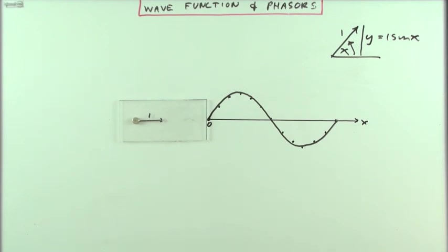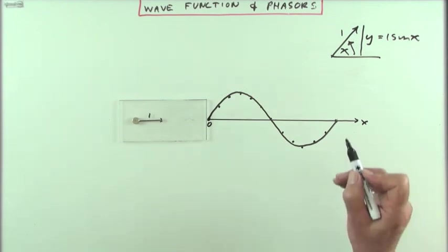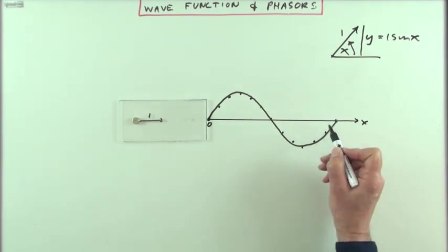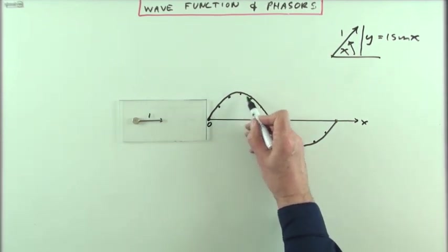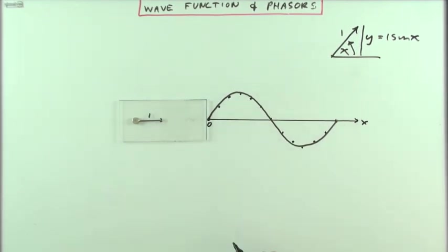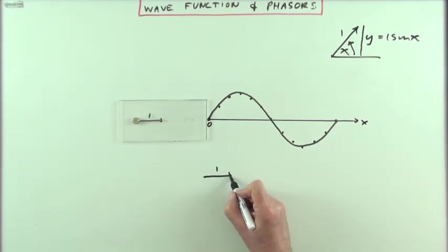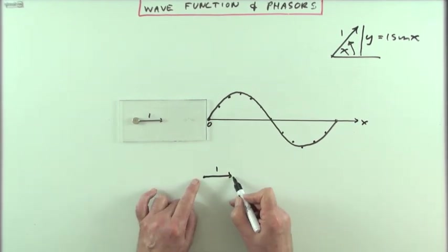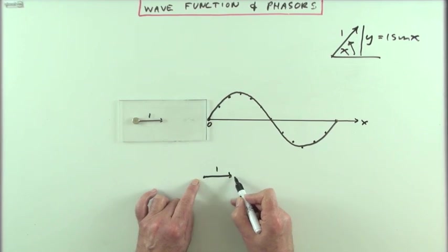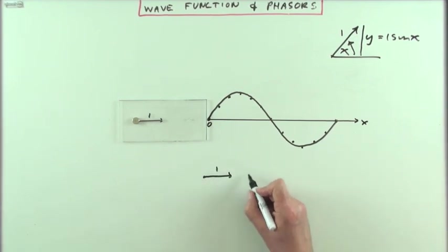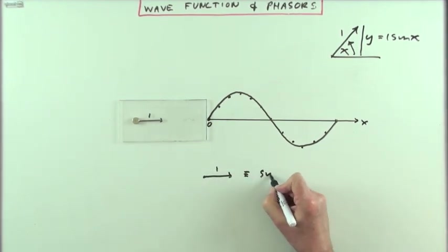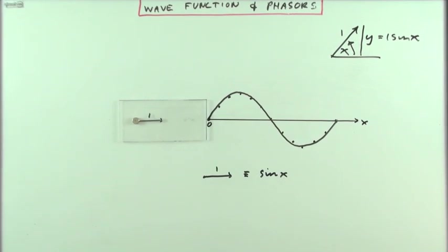The handy thing is that you can associate this wave with that vector. This whole curve can be represented simply by a line of length 1 sitting at 0 degrees to the horizontal. So you could say that phasor — length 1, starting horizontal — represents 1 times the sine of x.